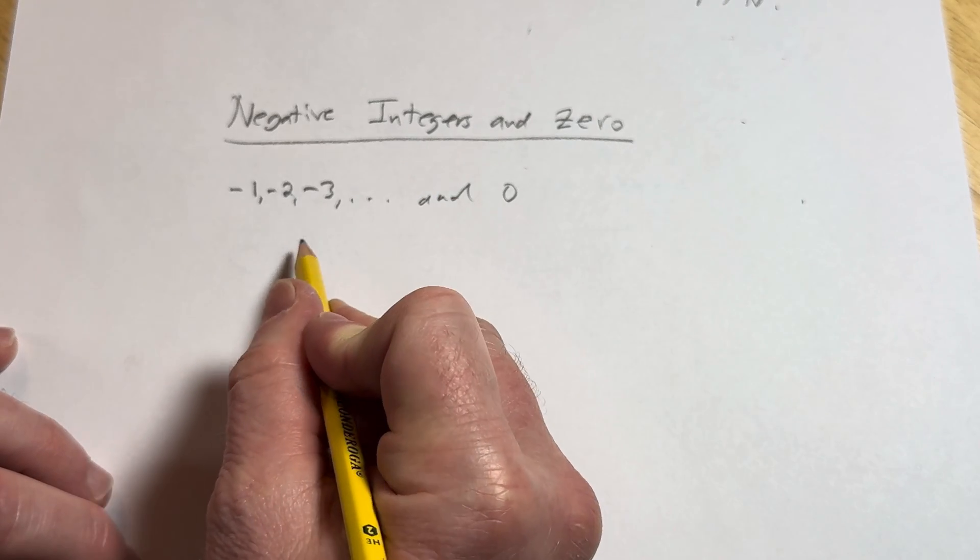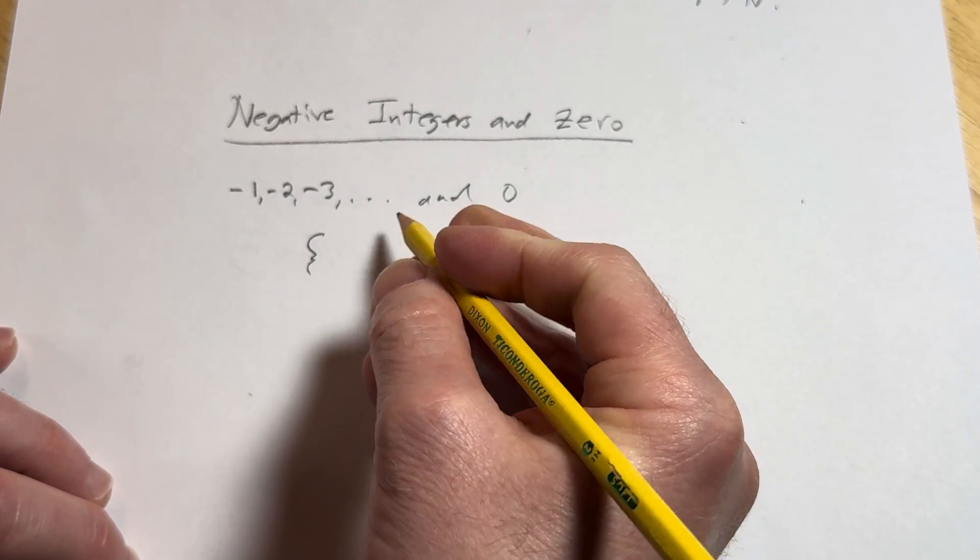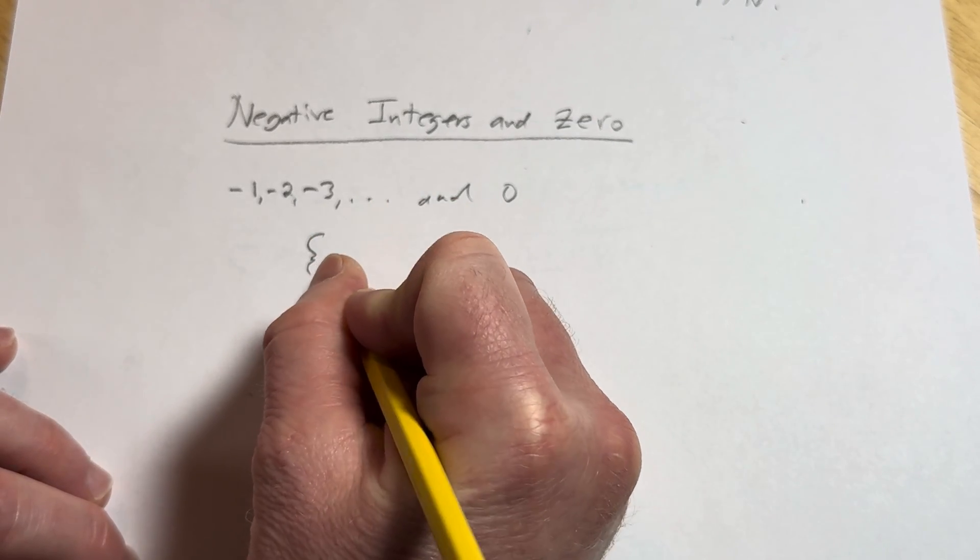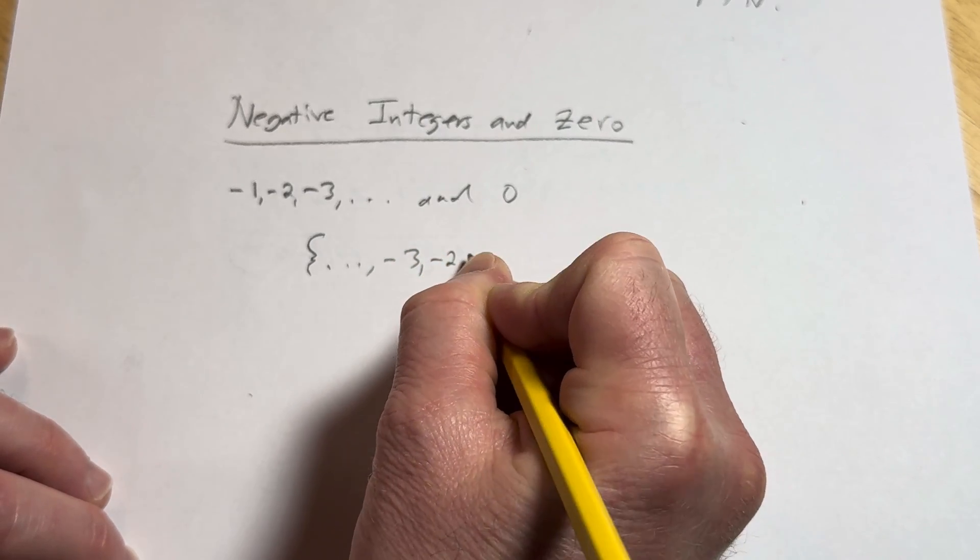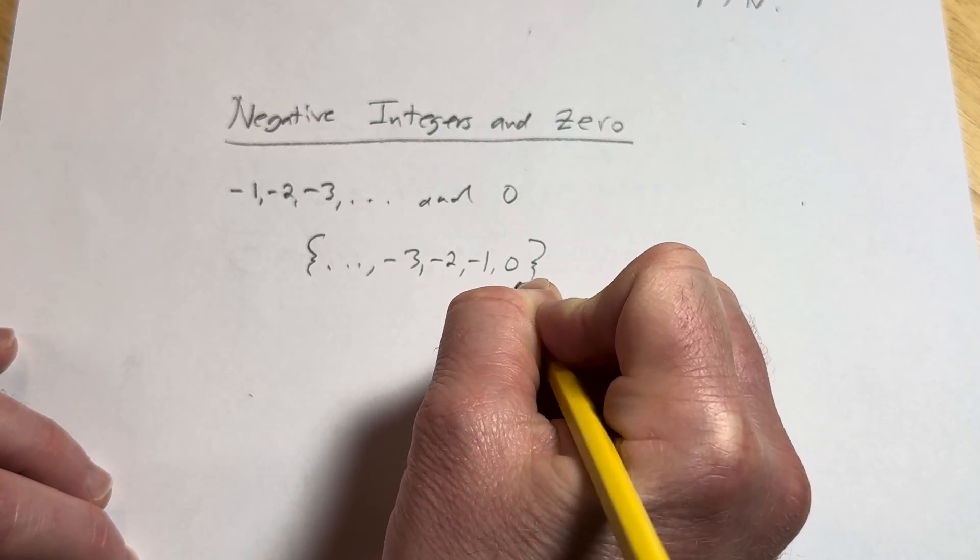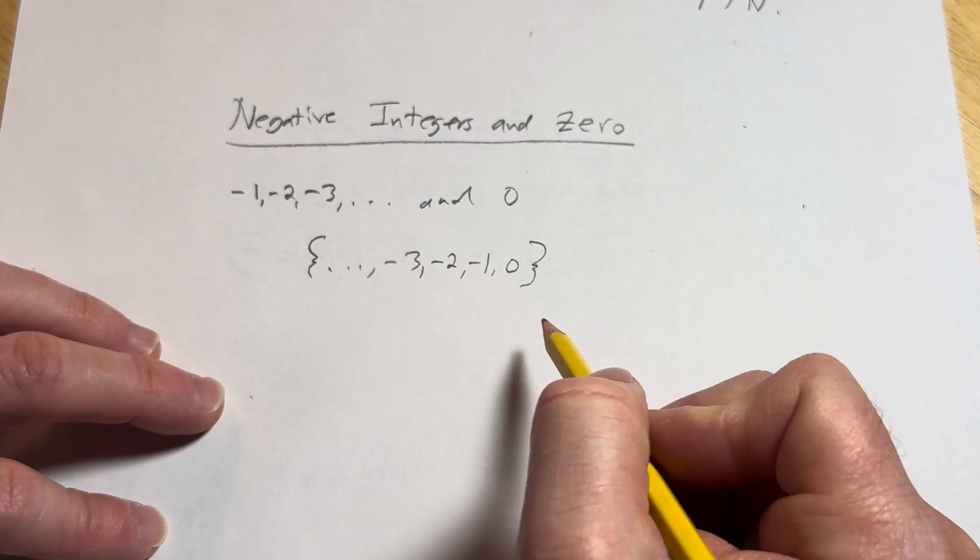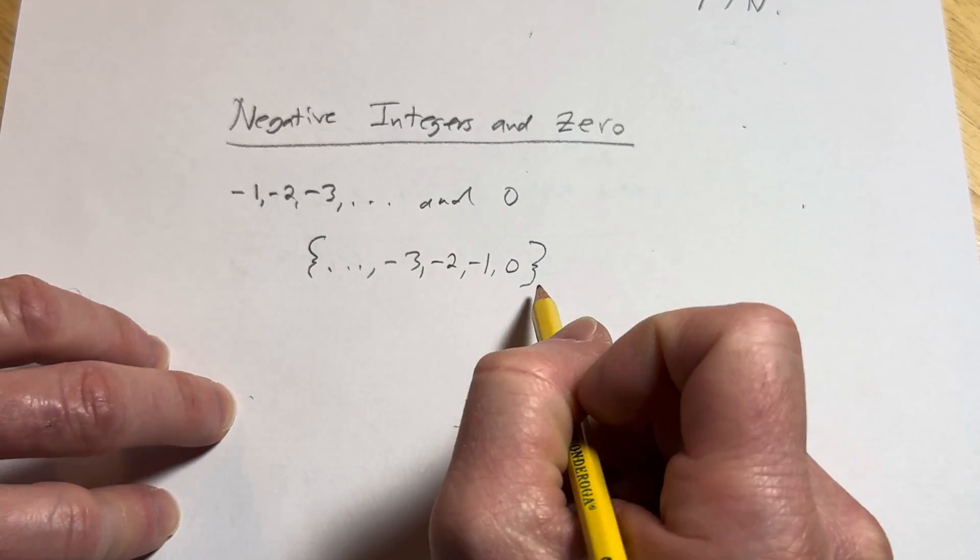You could also write it like this: dot, dot, dot, negative three, negative two, negative one, zero. This is typically how you would see it. So this is the set of negative integers and zero.